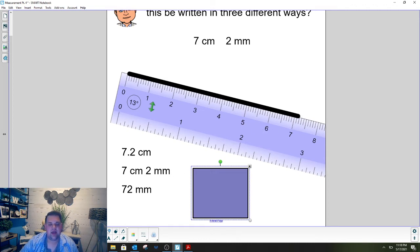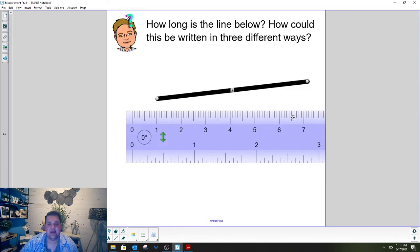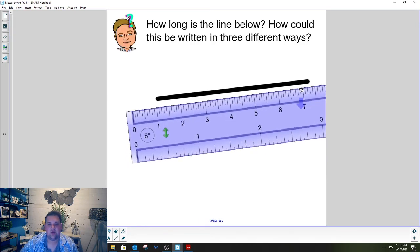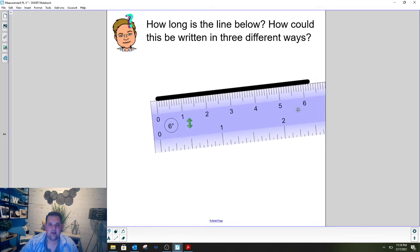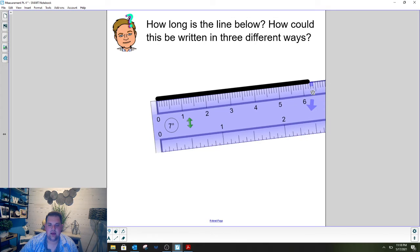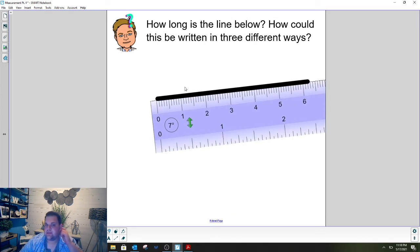So I'm going to ask you to help me in PlayPosit answer how long this line is. I'll make sure to move the ruler so that you can see how long this line is. So now the ruler is placed at zero. I want you to type in one of the ways you could write how long this line is. You could do centimeters millimeters, you could do all millimeters, or you could do all centimeters. You try it.